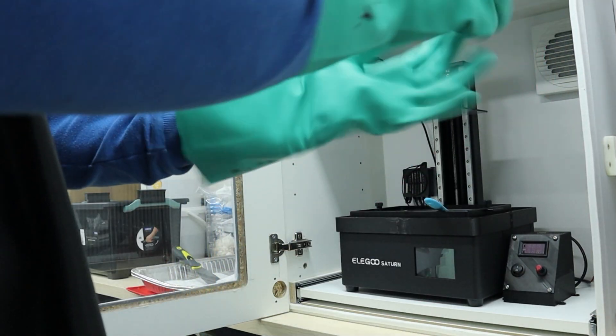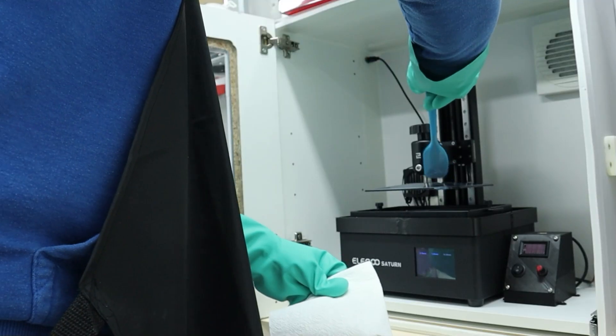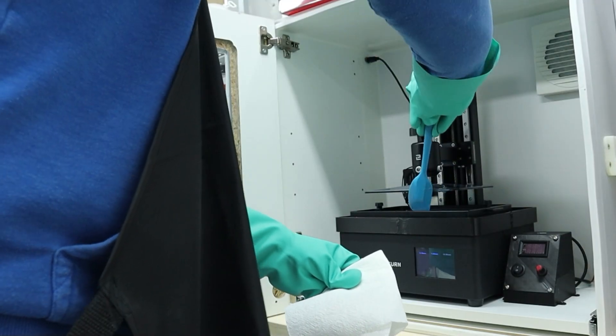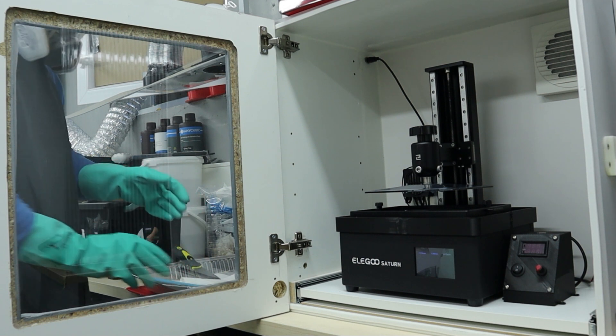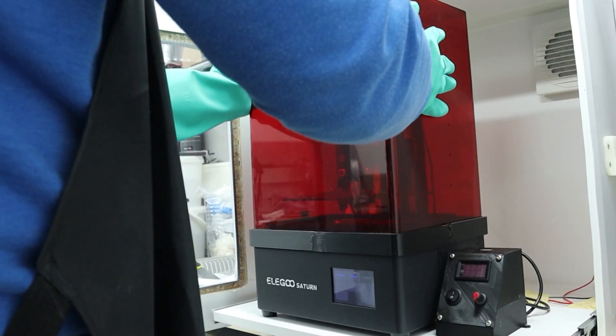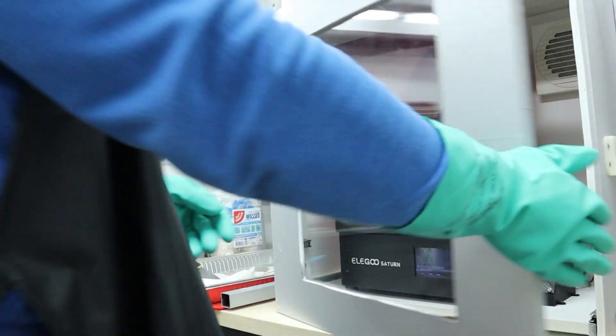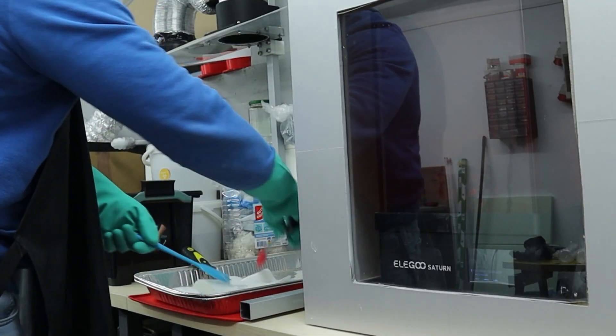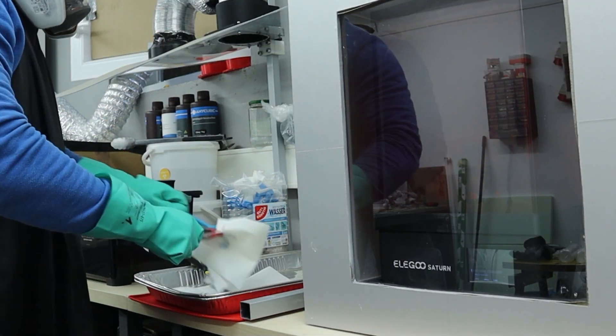Following this I re-glove, lower the build plate, remove excess resin from the spatula and securely place it into a foil pan using a paper towel for protection, and then I start the print. I take the same paper towel to clean the spatula, discarding it in the trash can to later cure it. It is essential not to throw away any uncured resin.